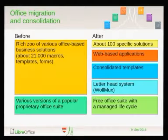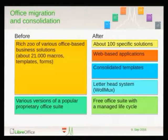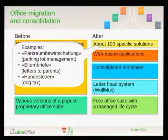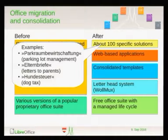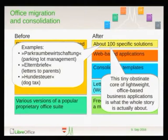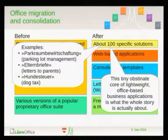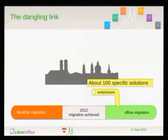However, a reminder: about 100 specific solutions could not be migrated to something different, so they were transformed as macros, extensions, and forms from the previous office suite to OpenOffice or LibreOffice. To give you some examples of what these look like: there were simple things for parking lot management, writing letters to school parents, and calculating details in dog tags. I've given you the original German terms as well, just for your amusement. So this was a tiny but obstinate core of quite lightweight, still office-based business solutions which we couldn't get rid of — and this is what I'm actually talking about here.